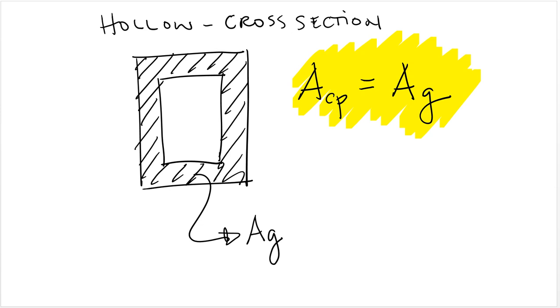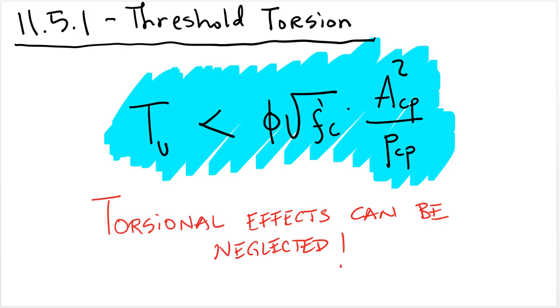So again, if your ultimate torsional moment is less than φ√f'c × ACP²/PCP, torsional effects can be neglected. ACP is the area enclosed by the perimeter of the cross section and PCP is the perimeter of the cross section.